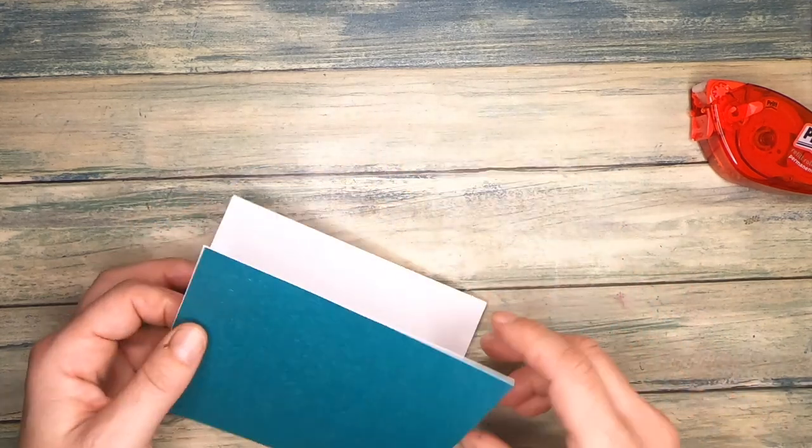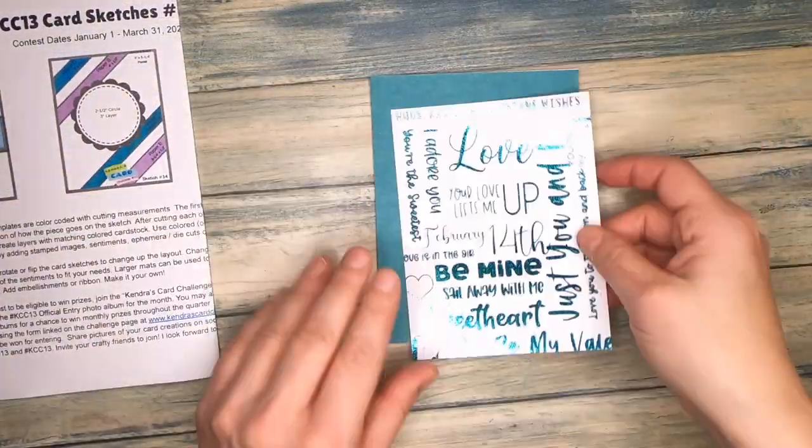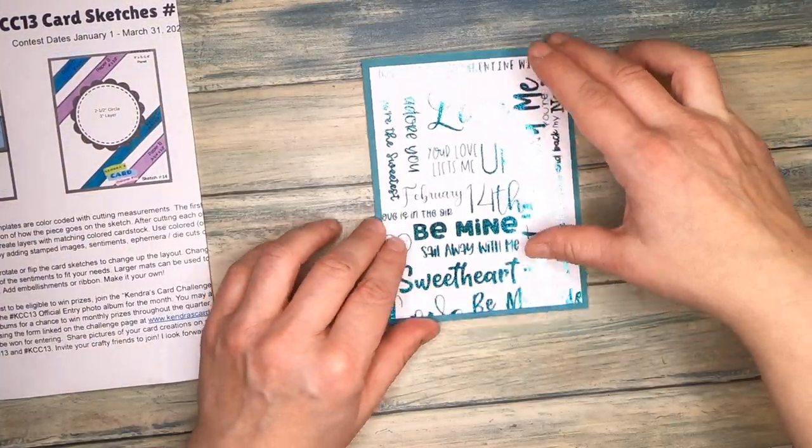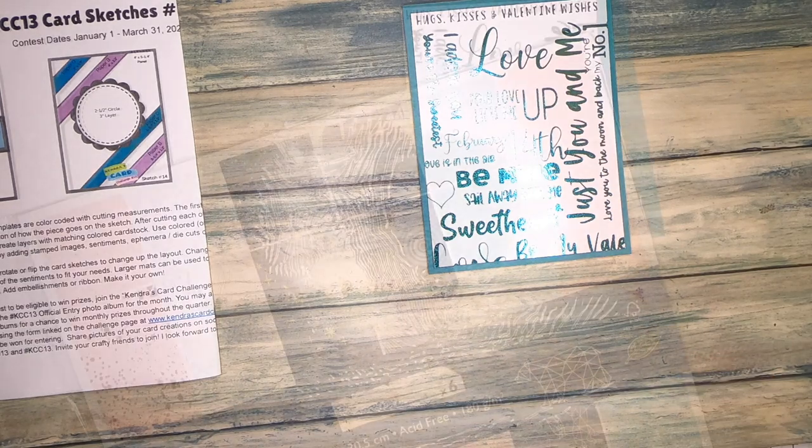So first I put down my background panel, which is exactly the size of the card, so 4 and a quarter by 5 and a half. On top of that I put my shiny word cloud sentiment panel, which is the size 4 by 5 and a quarter.